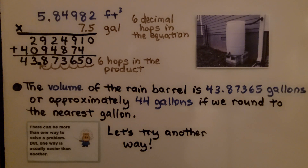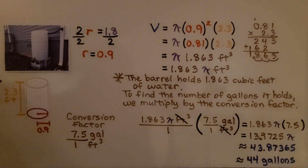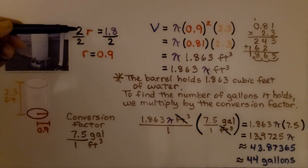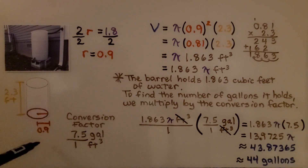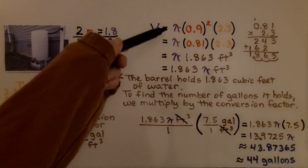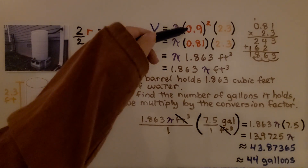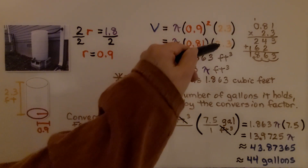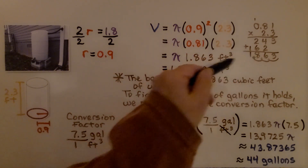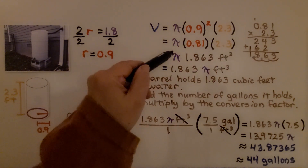There can be more than one way to solve a problem, but one way is usually easier than another. Let's try another way. The diagram tells us the height is 2.3 feet and the radius is 0.9 feet. We substitute the information into the formula, and we know that 0.9 squared is 0.81. We multiply that by 2.3 for the height and get 1.863 cubic feet with pi still to be applied.